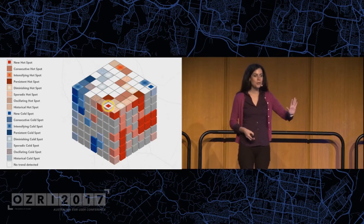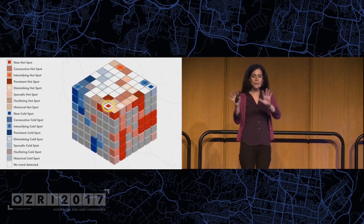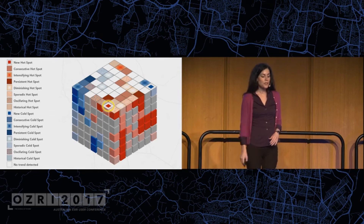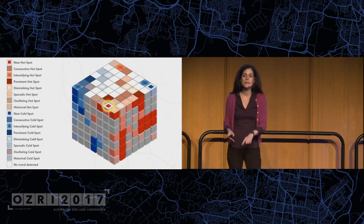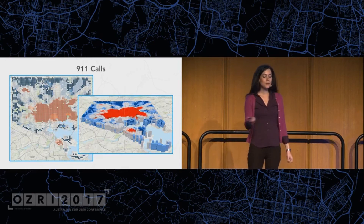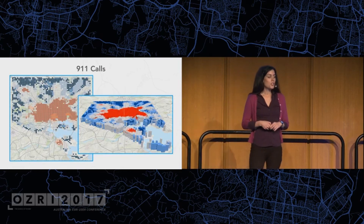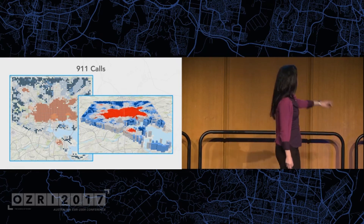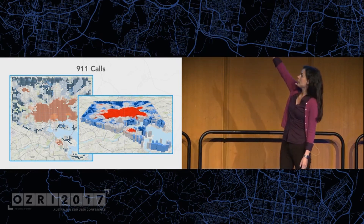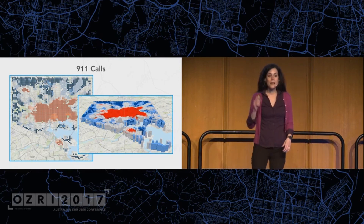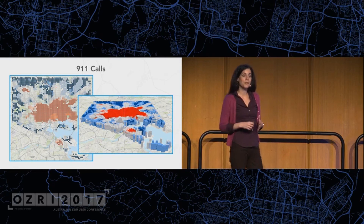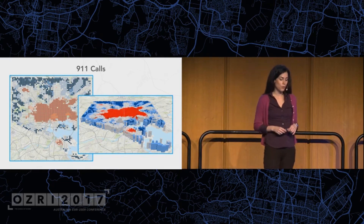This is most useful when you combine the 2D and 3D outputs to investigate the results. If I just gave you the 3D cube, it would be hard to make sense of it. If I just gave you the 2D output, you wouldn't know what kind of pattern fell in each location — like an oscillating hotspot, you wouldn't know how many times it went back and forth. With Pro, you can look at a map in 2D and a scene in 3D at the same time. We say the 2D is the answer and the 3D is the evidence. Here's the result of that emerging hotspot analysis for the 911 calls — we see intensifying hotspots in the center with the gradient-looking squares, and intensifying cold spots around the outside, getting colder and colder over time.